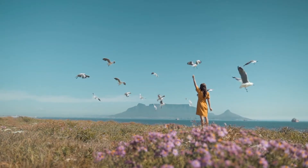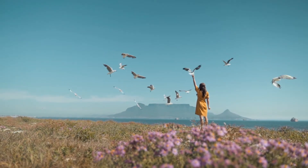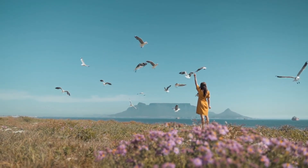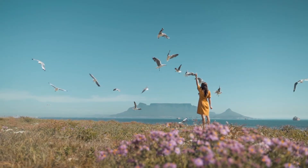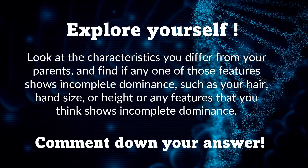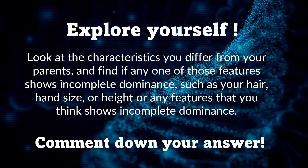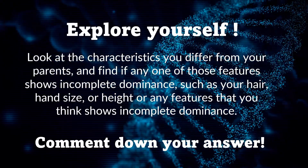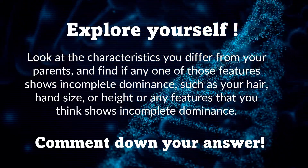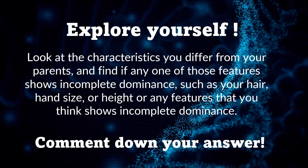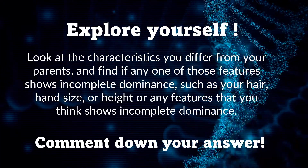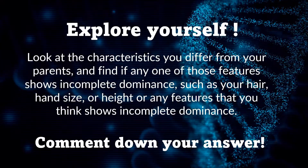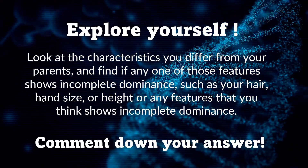Now that you are able to identify incomplete dominance examples in different life forms, next time you go out, you will see which flowers or animals show incomplete dominance. But before that, try to explore yourself first — look at the characteristics you differ from your parents and find if any of those traits show incomplete dominance, such as your hair, hand size, or height, or any feature that you think shows incomplete dominance.